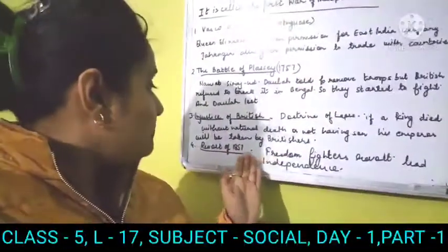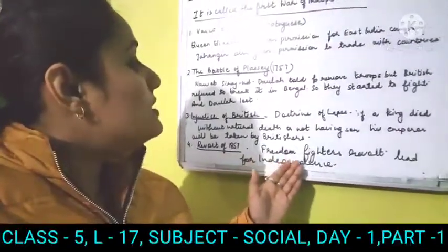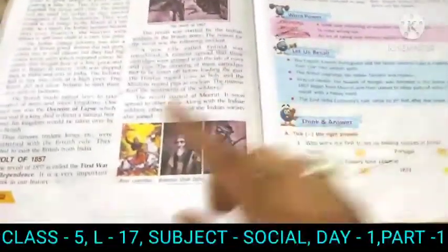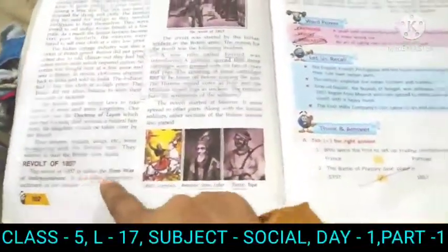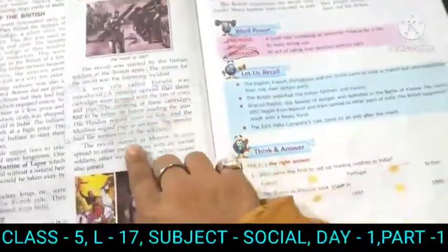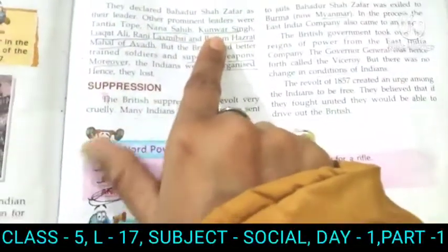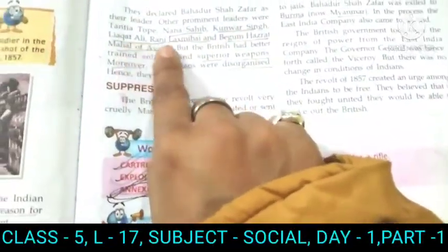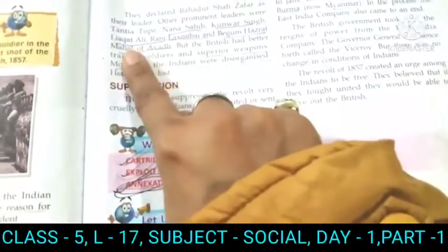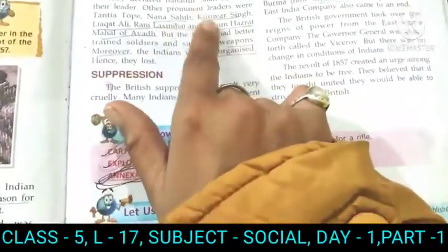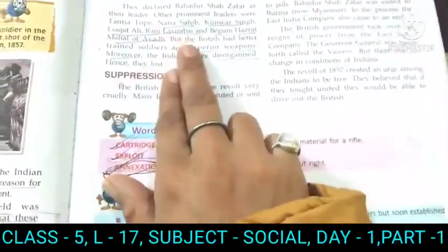That revolt is known as the freedom fighters' revolt — the First War of Independence. I am going to show you some points in the book. The injustice of the British led to the Revolt of 1857. Prominent leaders who fought in the country include Nawab Siraj-ud-Daula, Kunwar Singh, Liaquat Ali, Rani Lakshmibai, Begum Hazrat Mahal of Awadh, and Bahadur Shah Zafar.